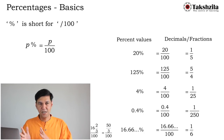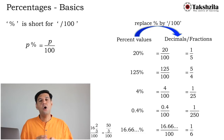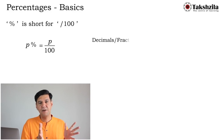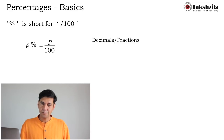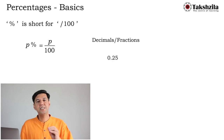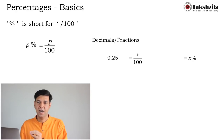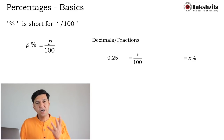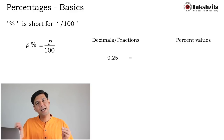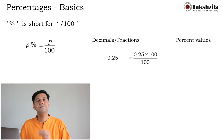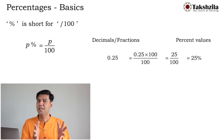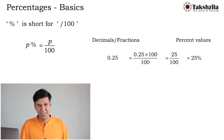The reverse is also true: any decimal or fraction can be converted to a percentage. For 0.25, represent it as a fraction with denominator 100. Multiply 0.25 × 100 = 25, then write 25/100 = 25%. The calculation is: multiply the value by 100 and append the % sign. So 0.25 × 100 = 25%.